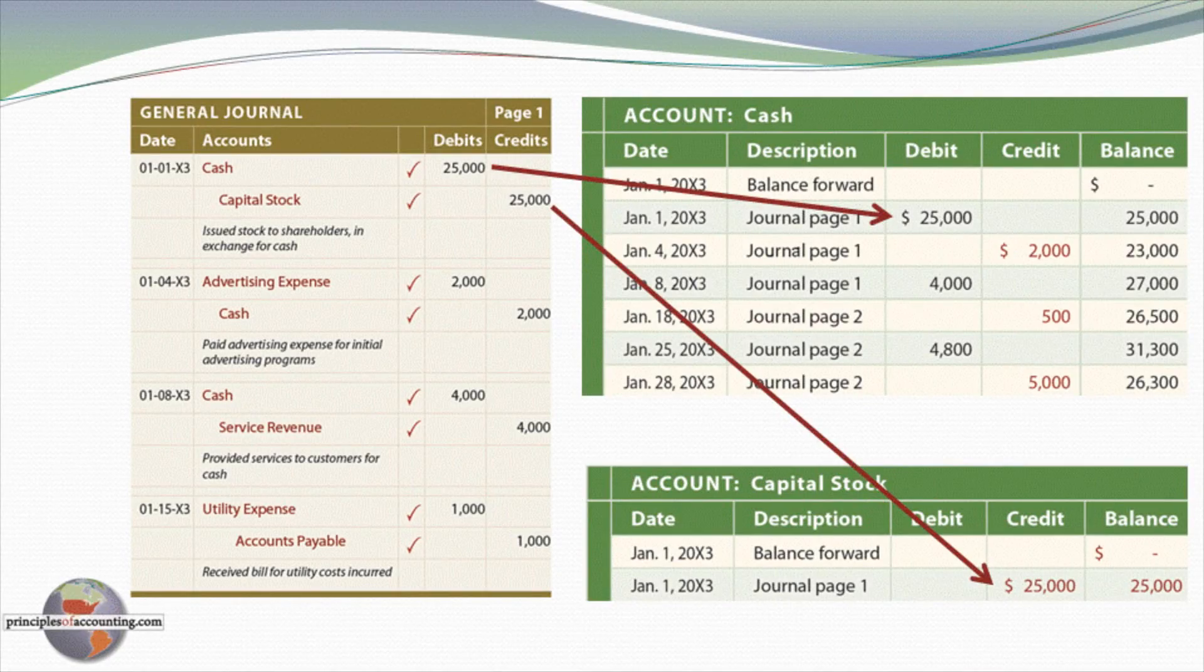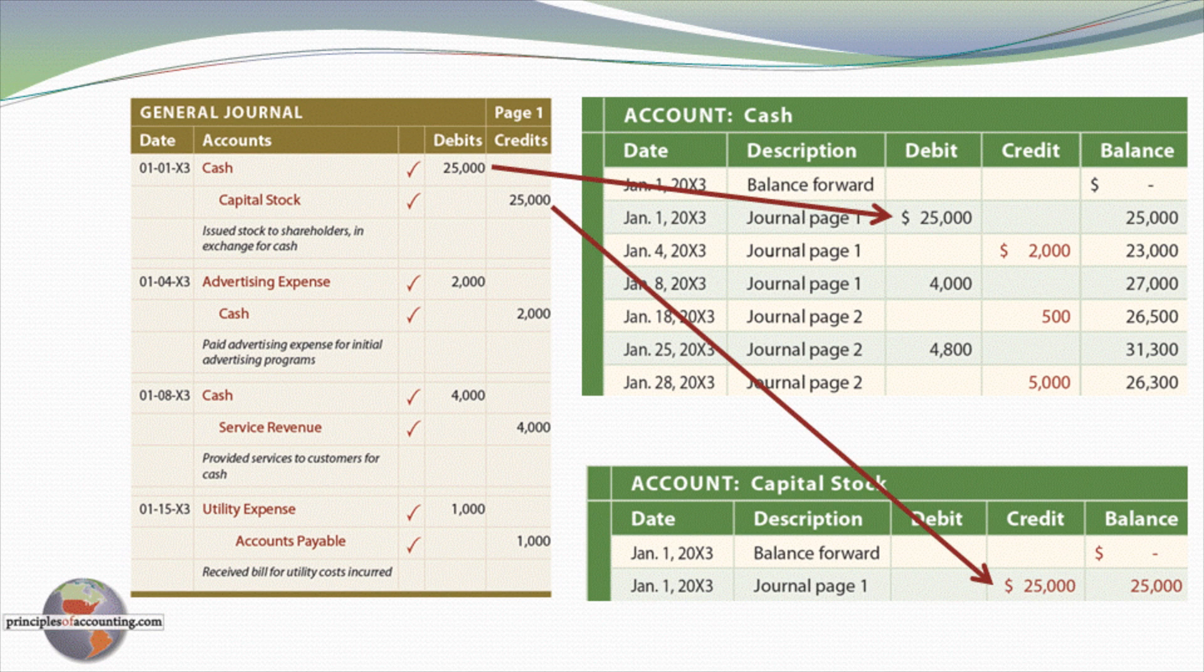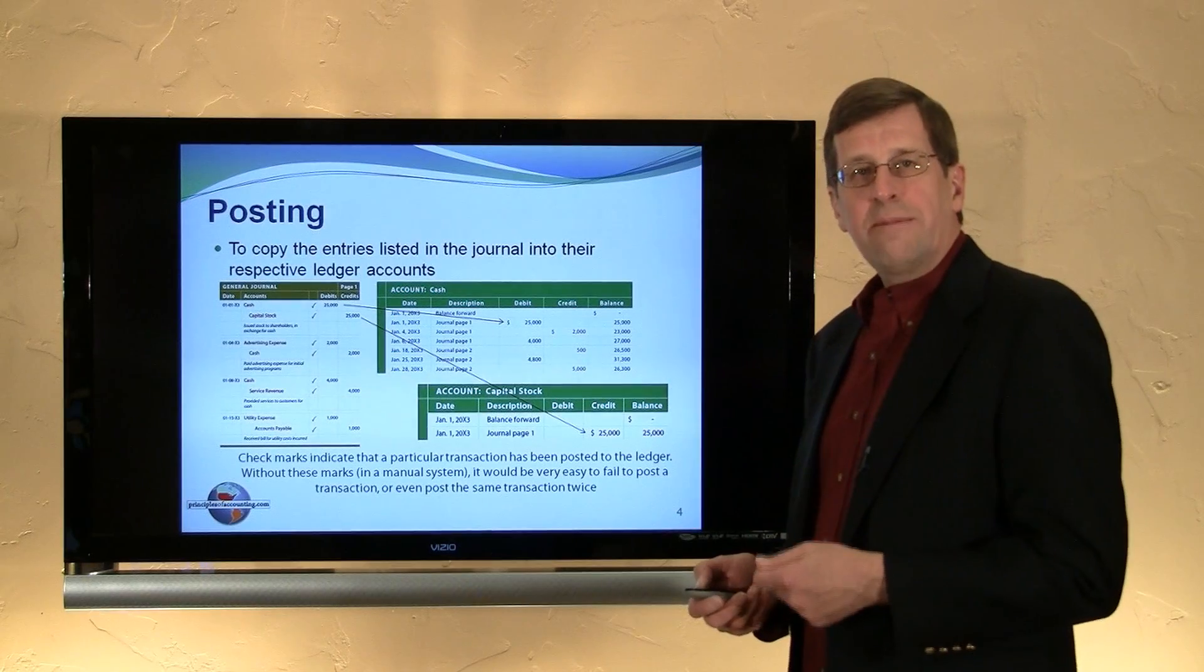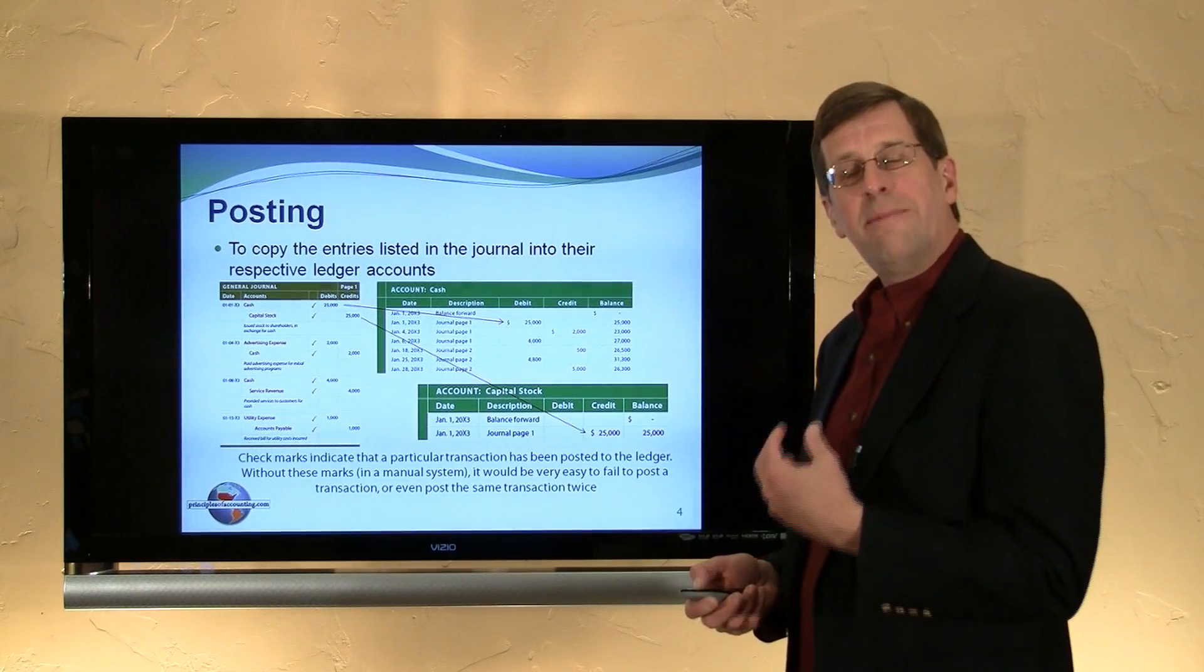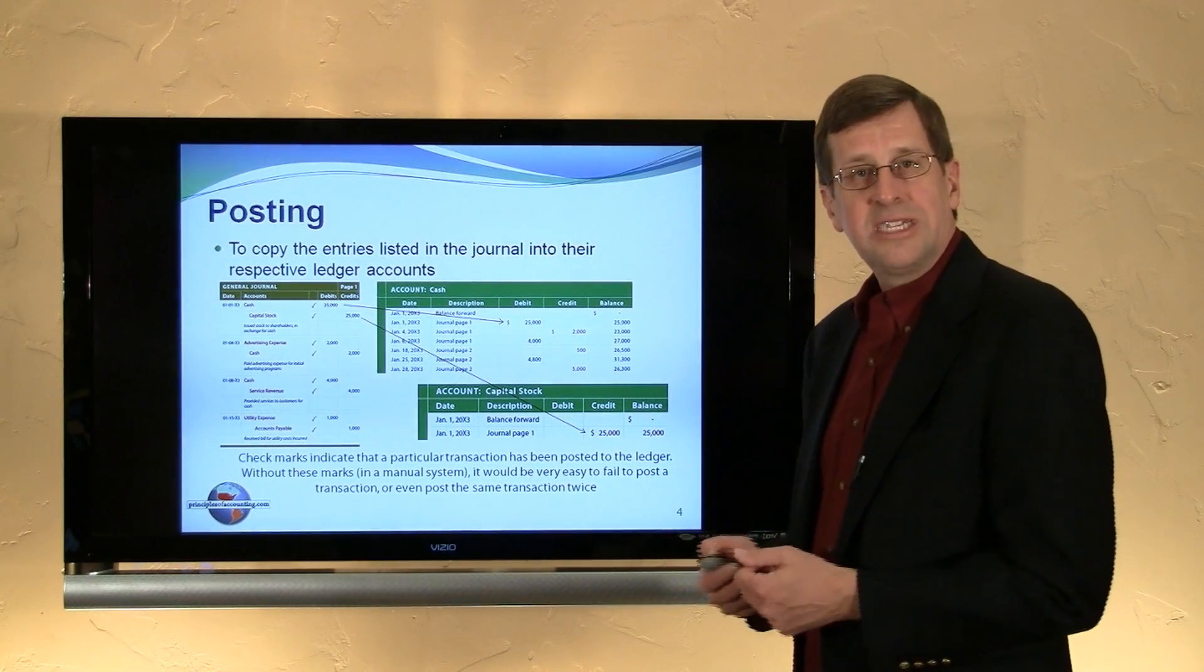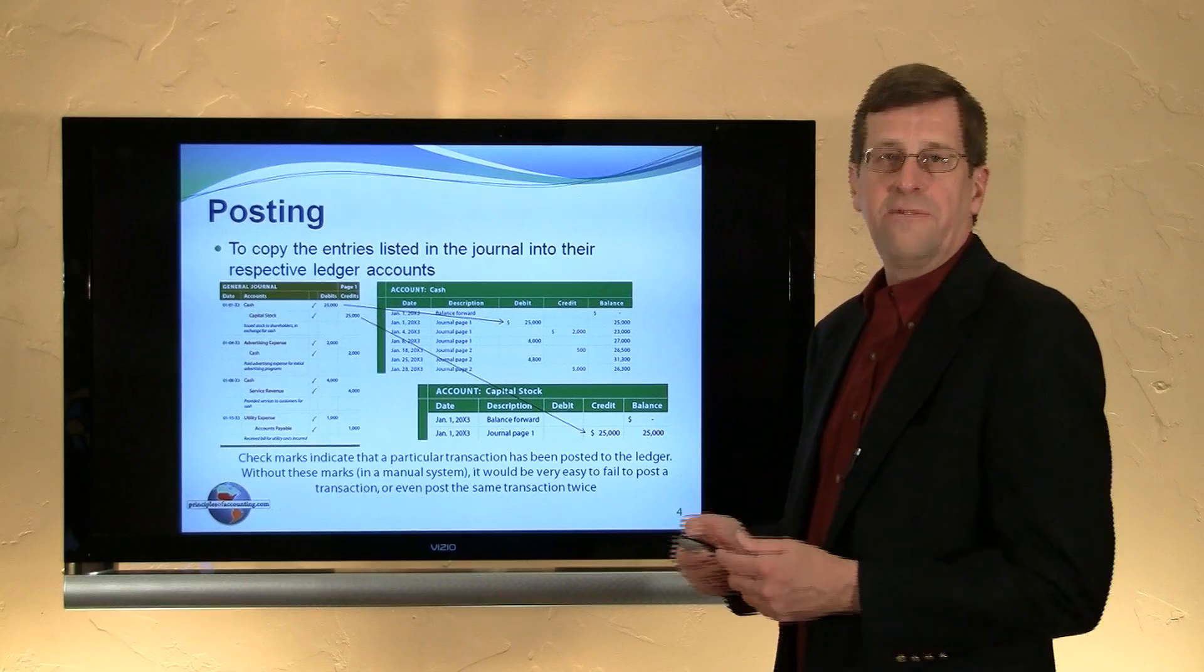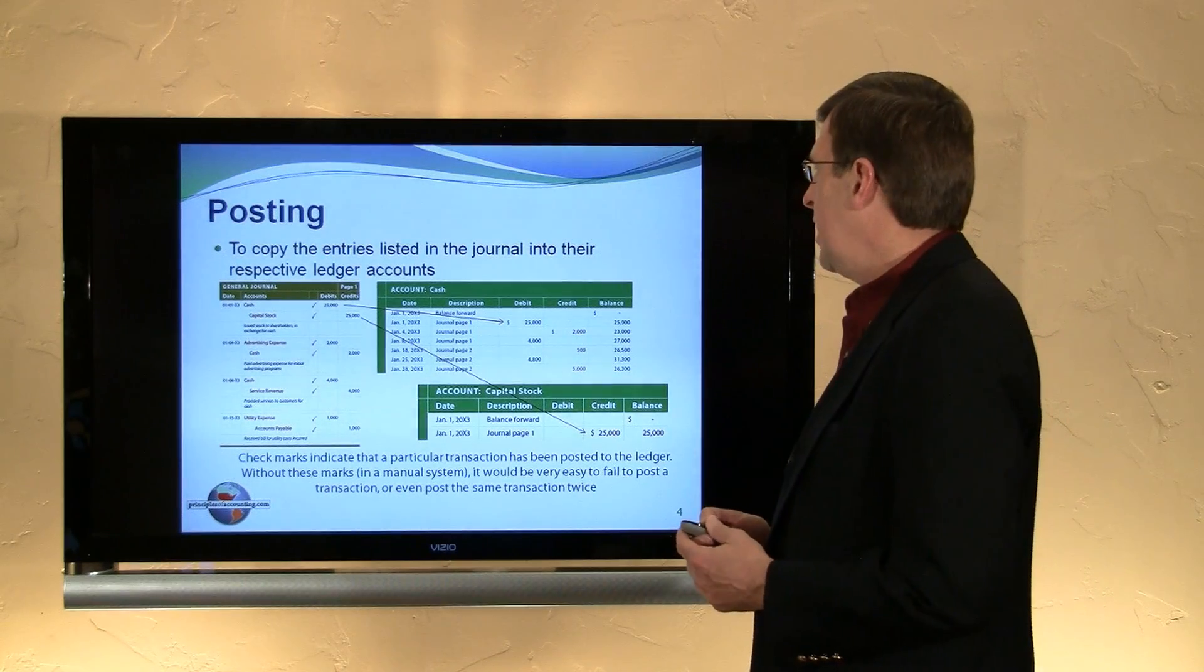Here we see on journal page one a $25,000 debit to cash. We find a subsequent credit of $2,000 to cash that occurred on January 4th, a $4,000 debit that occurred on January 8th. And so it would go as information from the journal was posted to the ledger. It's a good idea to put check marks in a journal to show when the amounts have been posted, to avoid posting the same transaction twice or indeed to forget to post a transaction at all.